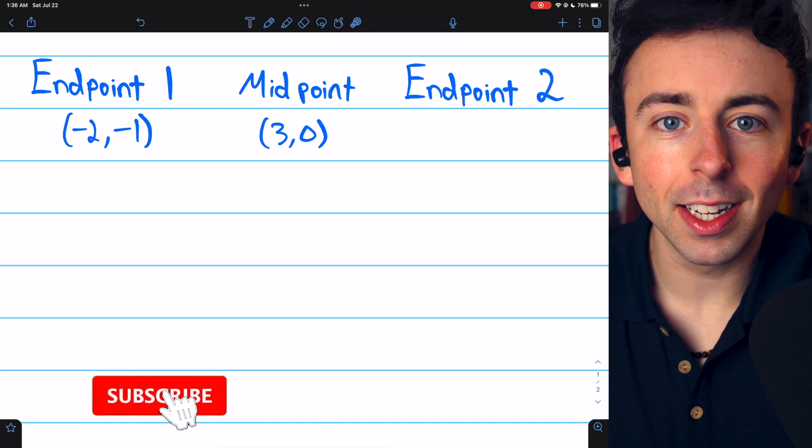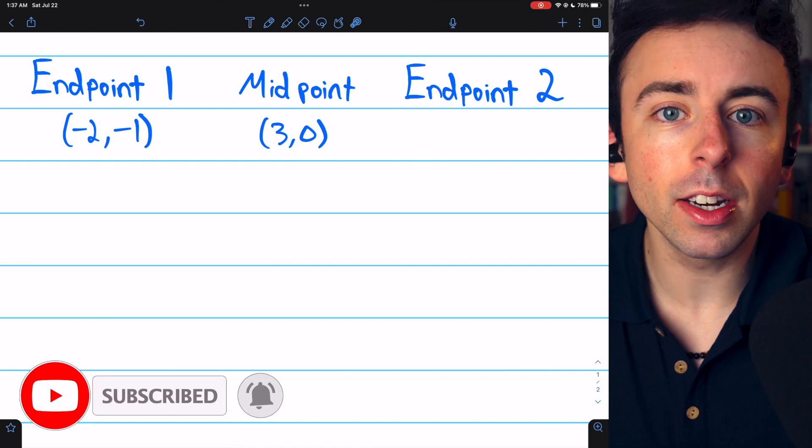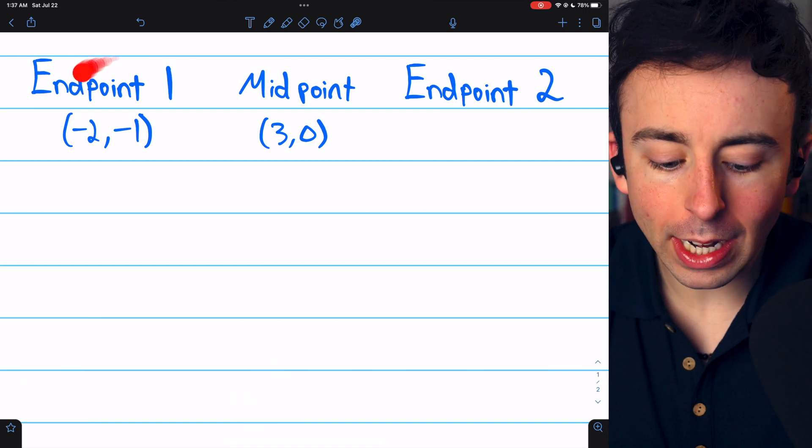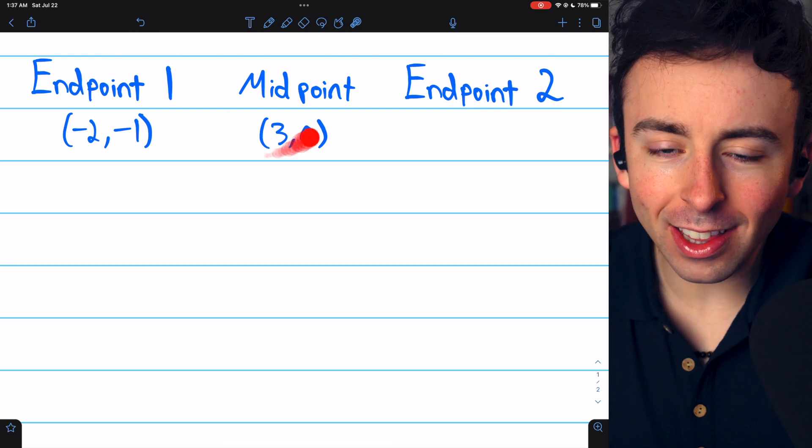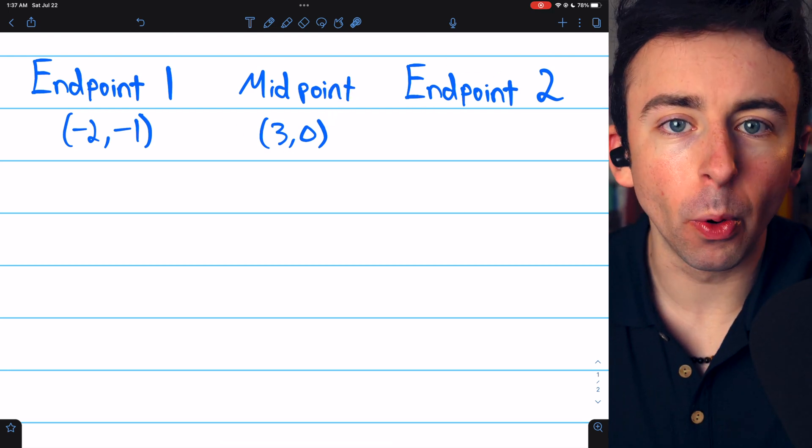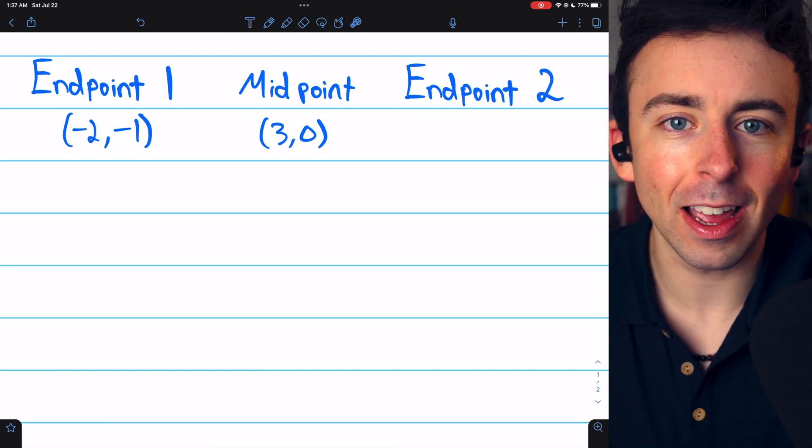If you know the midpoint formula, then you know how to find the midpoint of a line segment given the two endpoints. But what if we know an endpoint of the line segment and the midpoint and want to find the other endpoint? This is a pretty straightforward procedure. I'll show you a couple of examples.